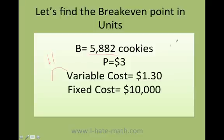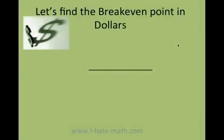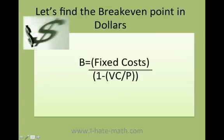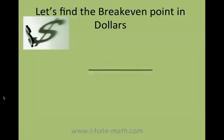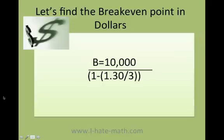If you sell less than five thousand eight hundred eighty-two cookies, you're in trouble. But if you sell more than this, you are making money. Now let's find the breakeven point in dollars — this tells us how much our sales need to be in order to break even.